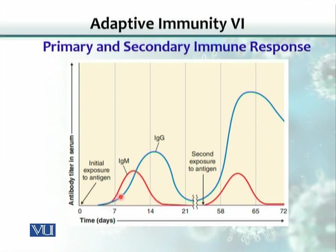At the same time, there will be some cells that initially were secreting IgM molecules but then change to another class of antibodies called IgG. IgM does not reach the same level as IgG. So initially IgG would be low in amount, but IgM would be more.